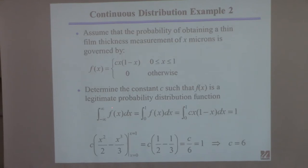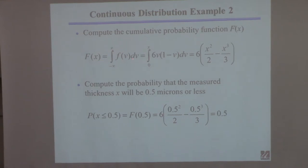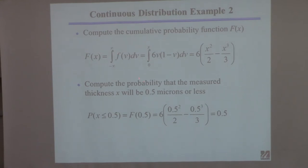Now I'm interested in the cumulative probability function. To do this I need to integrate this function. I want the cumulative distribution function — I have the probability function, so I'm going to integrate that from minus infinity to x. There's a typo on the slide; the upper limit should be little x, not plus infinity. If I integrate to plus infinity, I know it equals 1 — I just did that. To get the cumulative function, the upper limit needs to be x.